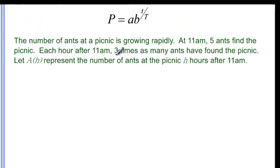The number of ants at a picnic is growing rapidly. At 11 a.m., five ants start the picnic. Each hour after 11 a.m., three times as many ants have found the picnic, and we want to find a of h, represents the number of ants in the picnic h hours after 11 a.m.